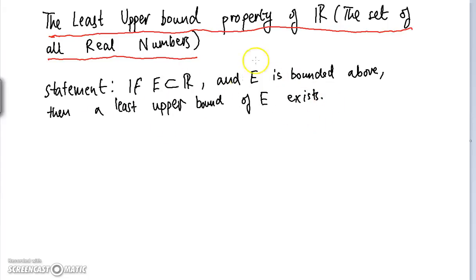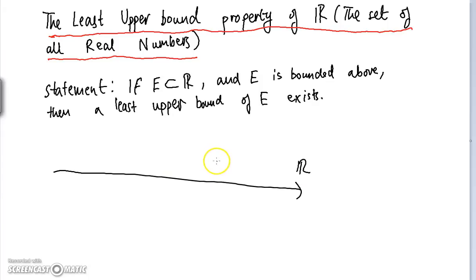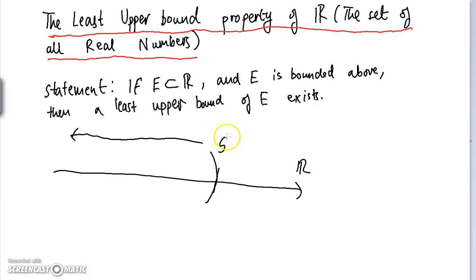There is some jargon in this statement we should clarify. What does bounded above mean? If we have a subset of the real line — say all numbers less than 5 — bounded above just means that we can find a number that's greater than all numbers in our set. In this case, 5 itself is an upper bound of this set, and actually 5 is also the least upper bound of this set.